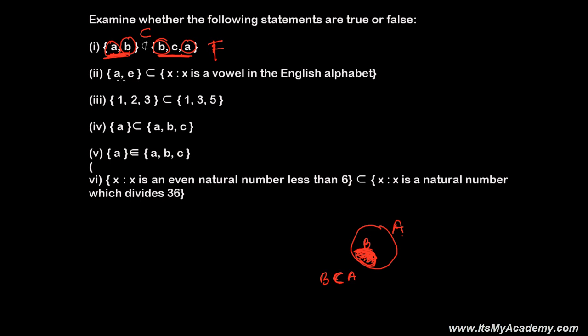And again A and E. If all the elements of first set is in the second set then again I will say this is a subset otherwise not. So X is the vowel in the English alphabet. So what are the vowels? That is A, E, I, O and U. These are the vowels. So I am getting here A and E and here I am getting A and E. So this is right. This is true.